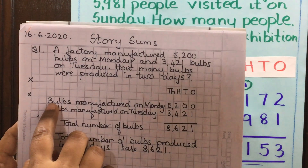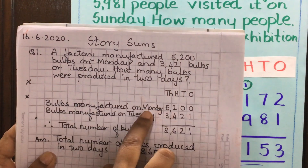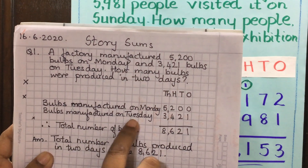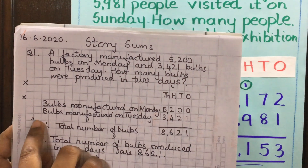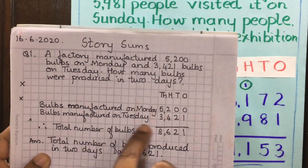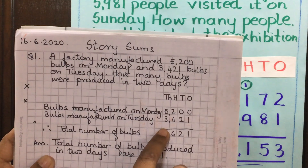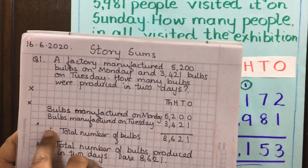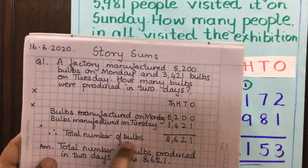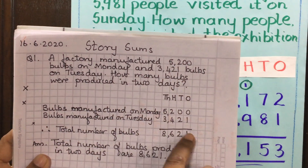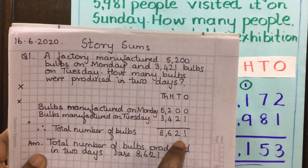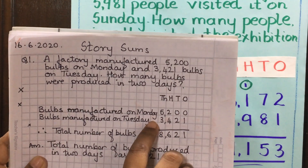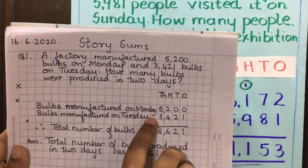Then you write down the first statement, then the next statement. If you please, you may leave one more line for neatness. Therefore, total — draw a line and do your addition. Do not forget to put the addition sign.